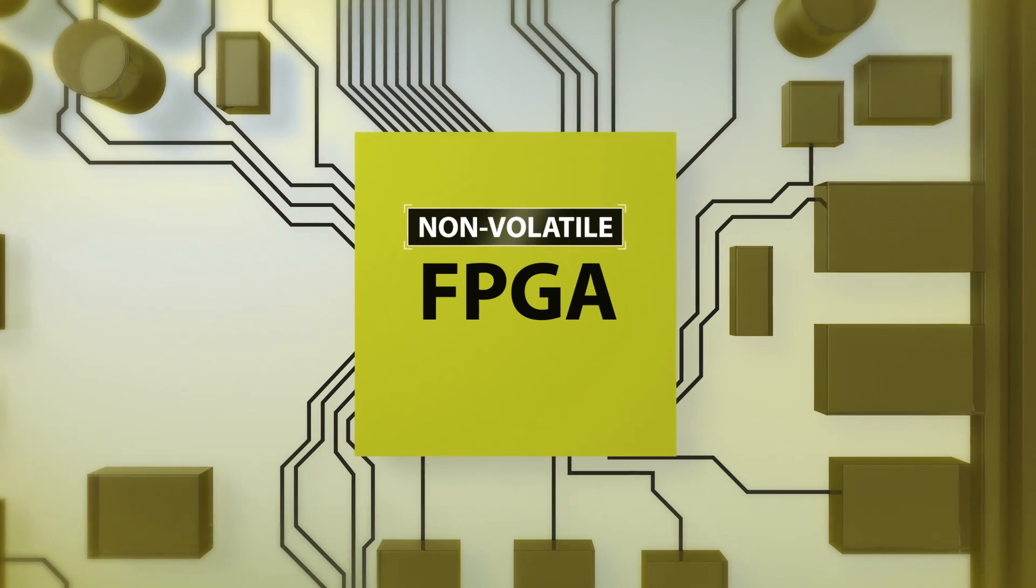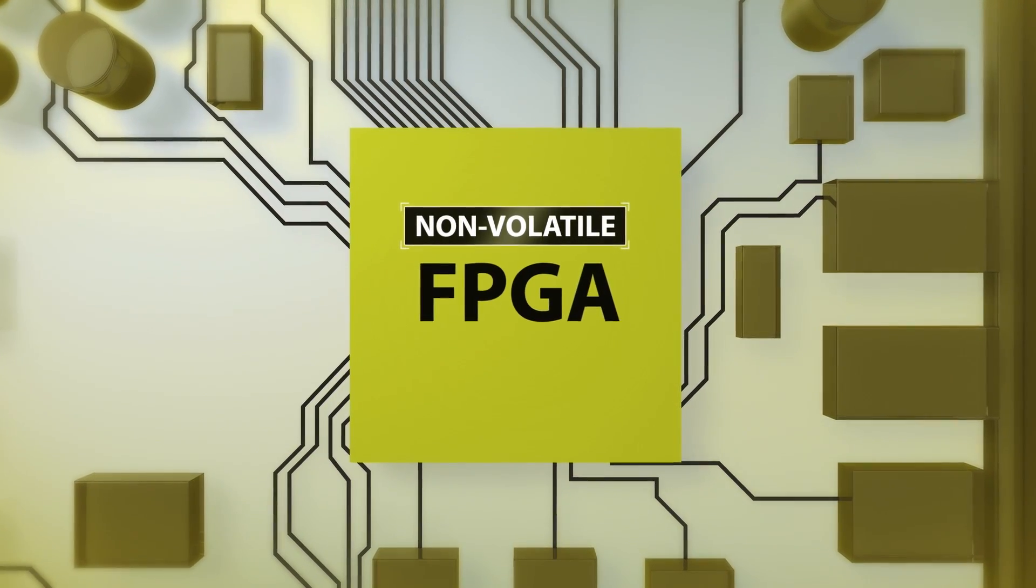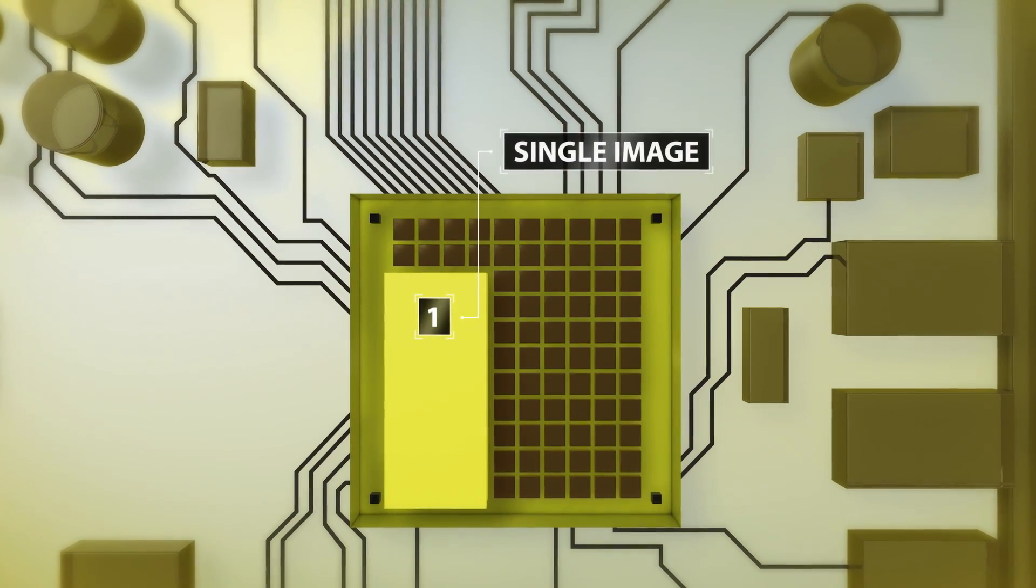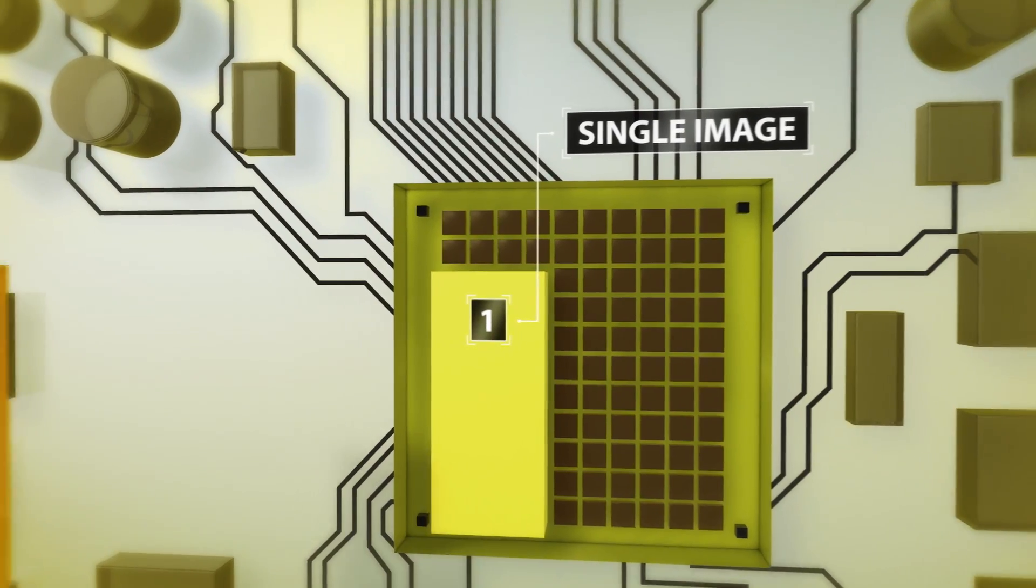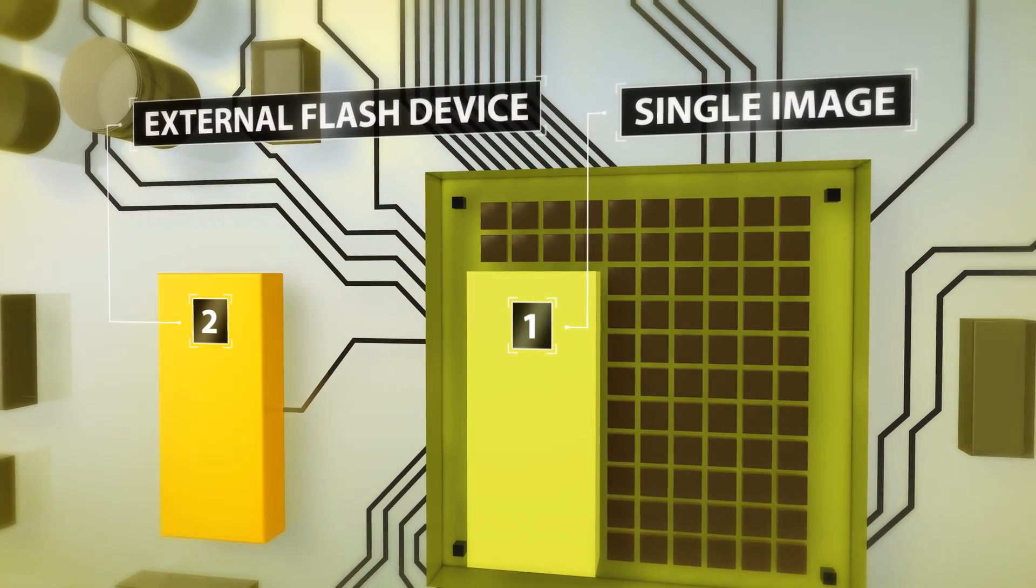Up until now, non-volatile FPGAs and CPLDs could store only one configuration image. If you needed a second image, you'd have to store it in an external flash device.